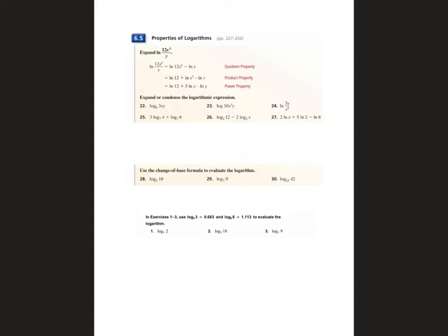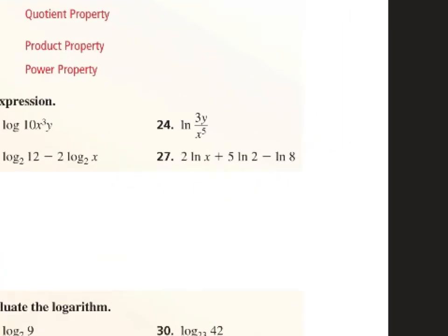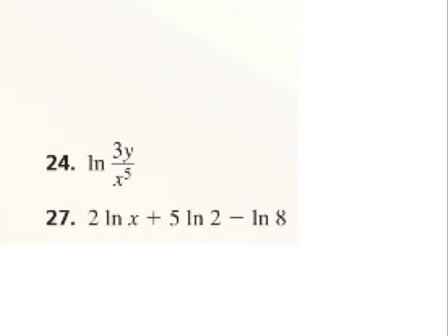Let's look at number 24. For number 24, are we going to expand or condense it? We need to expand it because it's just one term right now, so we can't condense it to anything smaller. We need to expand it. So if we are dividing, what do we have to do to expand that? We need to subtract. So this would be the ln of everything on top — so 3y — minus everything on the bottom, the ln of x to the 5th power.